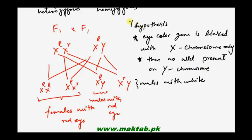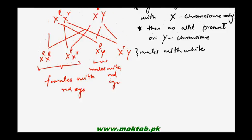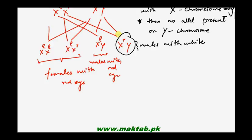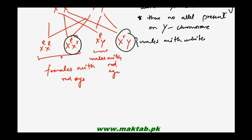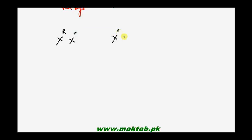Morgan's hypothesis was confirmed — the eye color gene is linked with the X chromosome only, and there is no allele present on the Y chromosome. To verify this, a test cross was performed using white-eye males and heterozygous red-eye females.